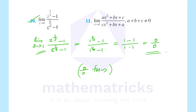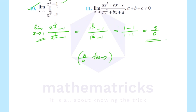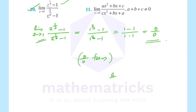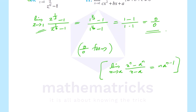We have 0 by 0 form. We need to factorize and restructure our equation. We need to rewrite z raise to 1 by 3 minus 1 divided by z raise to 1 by 6 minus 1.